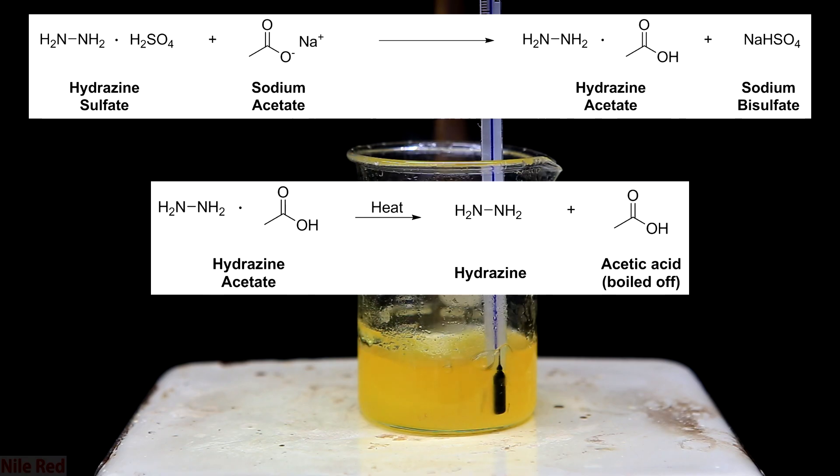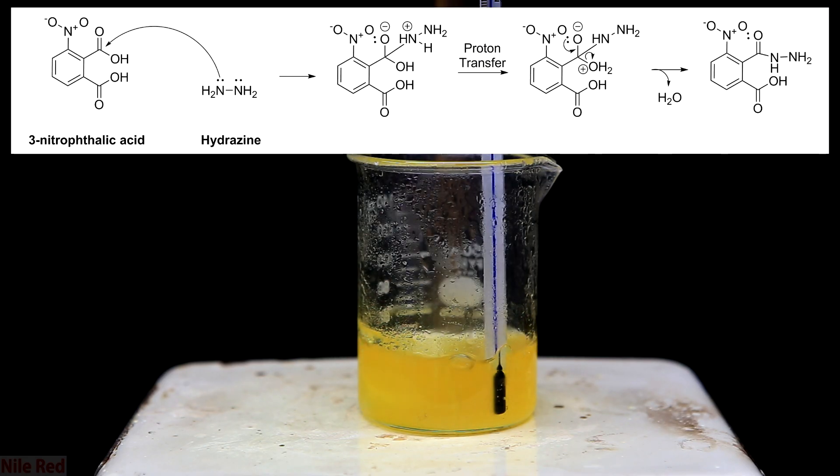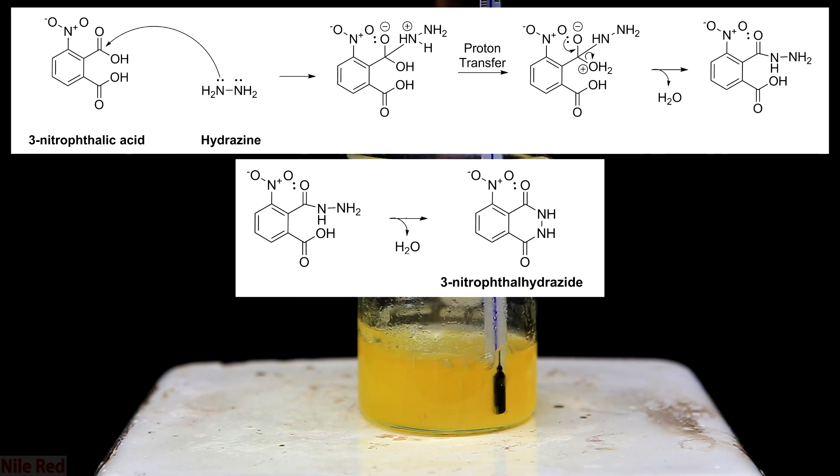I'm not going to go over the mechanism in crazy detail, but I still do want to cover the main steps. So before the reaction takes place, the first thing that happens is once we hit around 120 C, the acetic acid starts to boil off and our freebase hydrazine is liberated. One of the nitrogens of the hydrazine then attacks one of the carbons that is double bonded to an oxygen in the 3-nitrophthalic acid. The OH group that's attached to the same carbon ends up being protonated and it's kicked off as water. The other nitrogen in the hydrazine then attacks the other carbonyl group and the same thing happens, the OH is kicked off as water. Once this has all taken place, we're left with our 3-nitrophthalhydrazide and two water molecules.